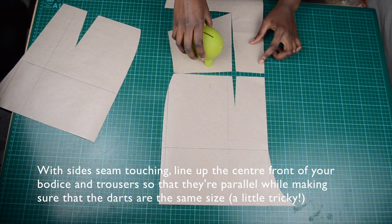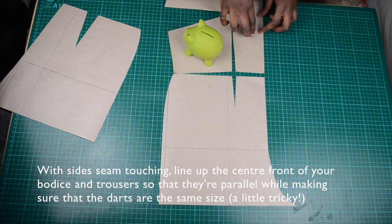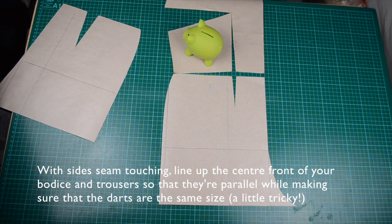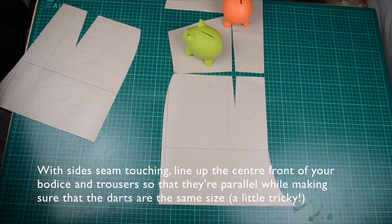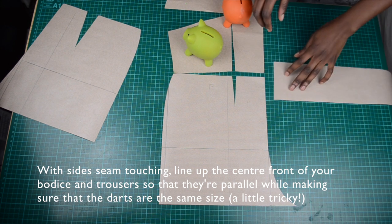As you can see, the bodice ends up bending upwards, but we need both side seams to be touching while keeping the center front of your bodice in line with the front of the trousers. I am using the straight lines of the cutting mat to keep the center fronts in line, but this creates a gap between the bodice and the trousers. This gap is fine.